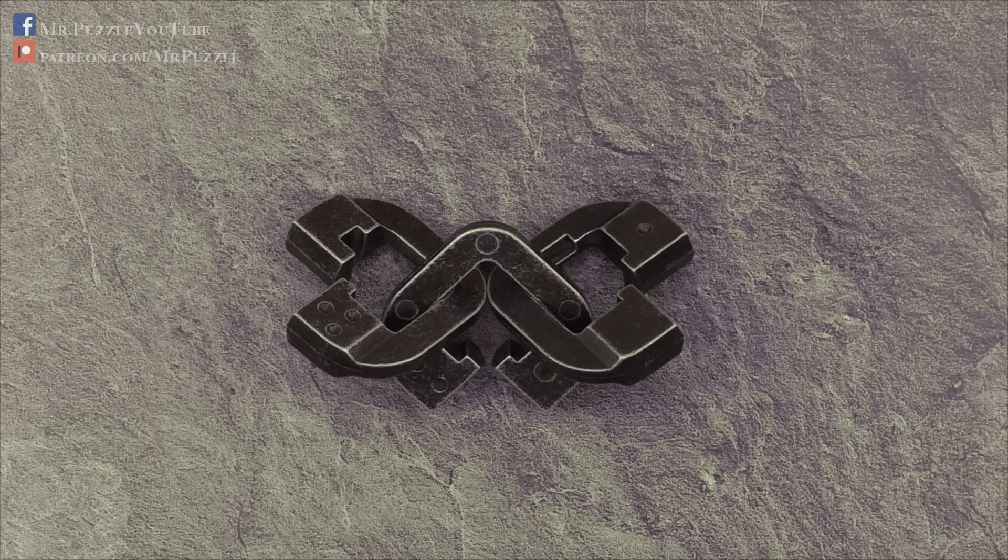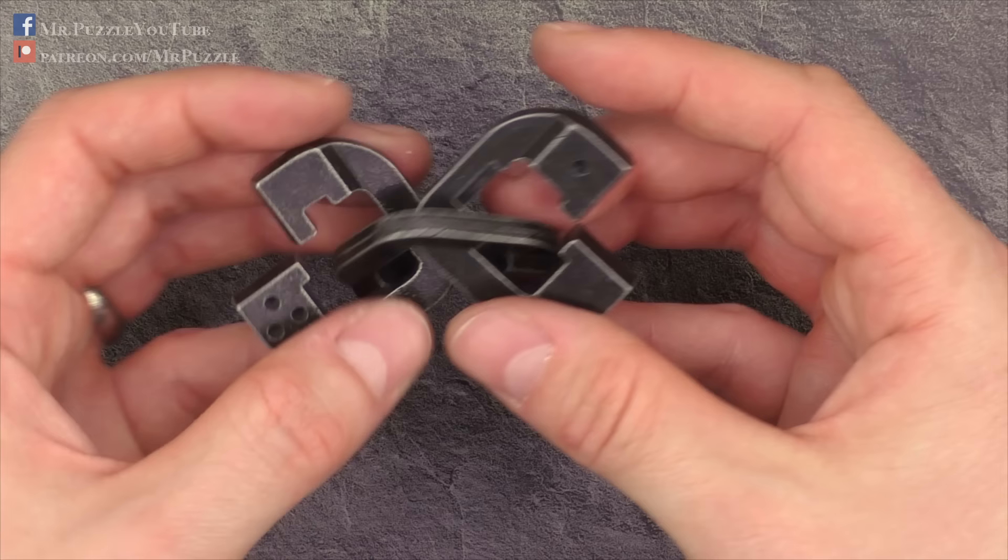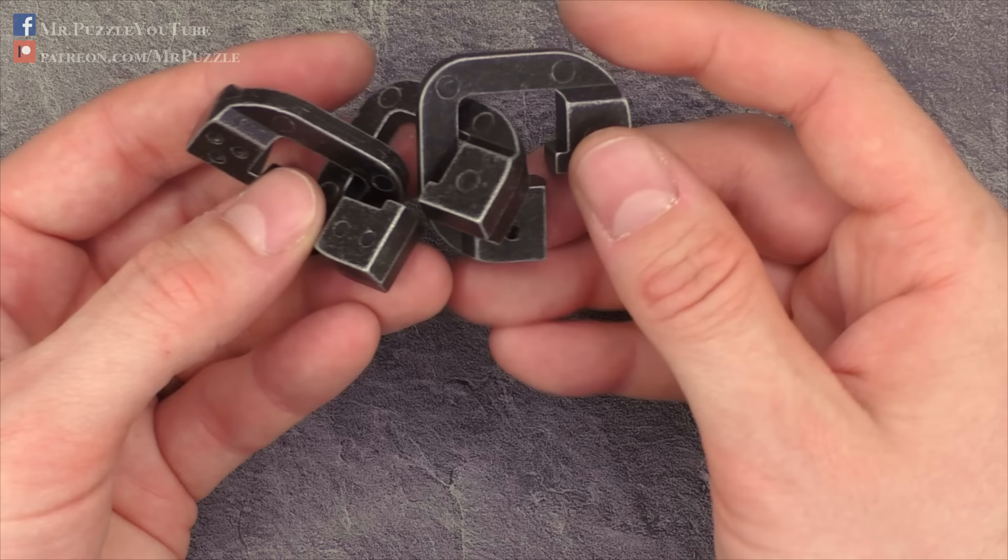Before I start, I'm showing you the disassembly and reassembly, maybe some words about the markings here, one, two, and three. This is how I will also name the parts, and they look like the marking here on a dice and visible from both sides.